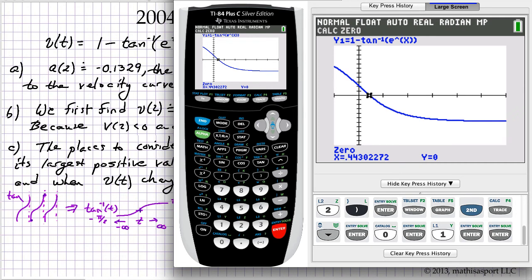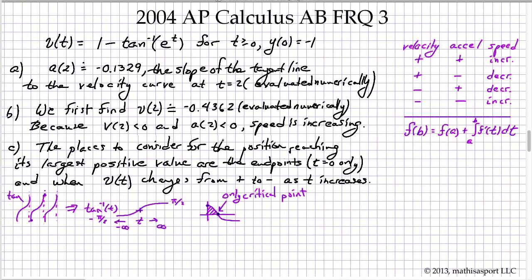That gives us a 0 of t equals 0.4430. So we can now enter that.